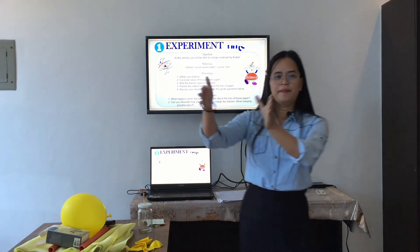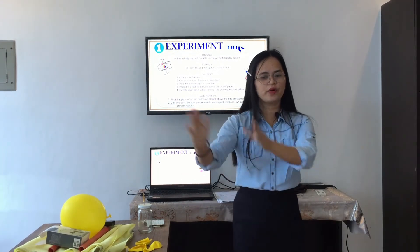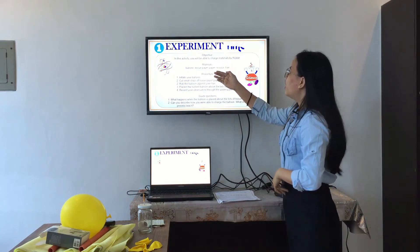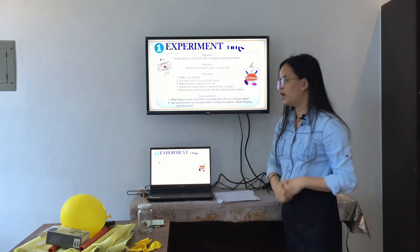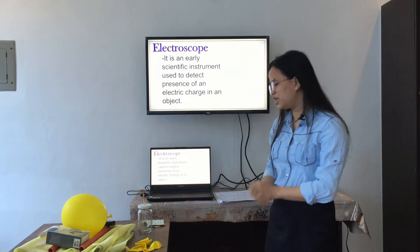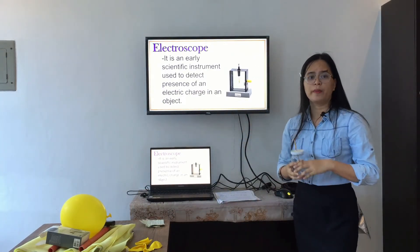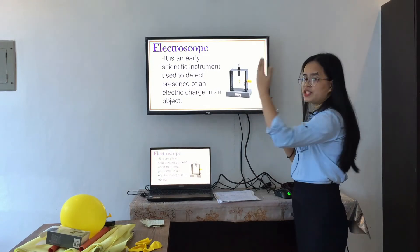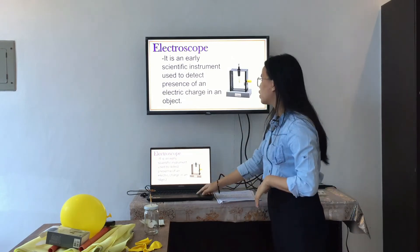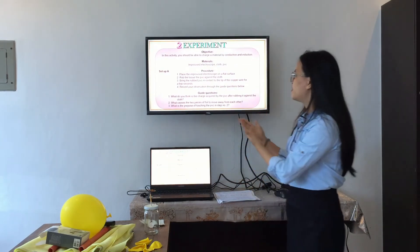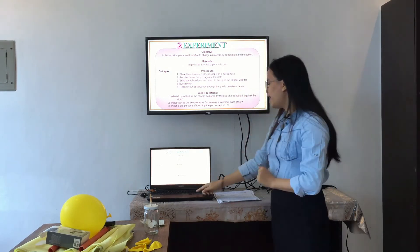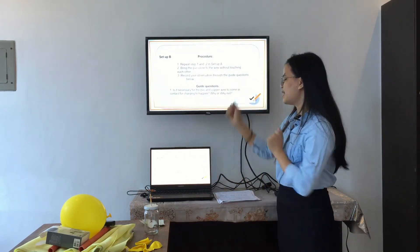Now we're going to do an experiment. Please go to your group — group one, group two, and group three. In the first experiment, we are going to charge materials by friction. In the next experiment, we are going to need an electroscope. An electroscope is an improvised device used to detect charge. We are going to charge material by conduction and induction — that is Set B.